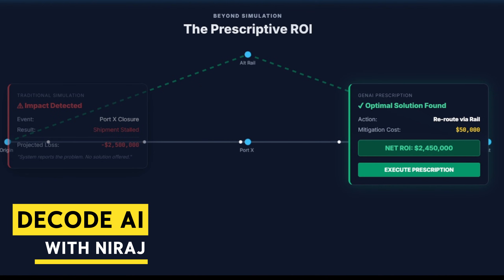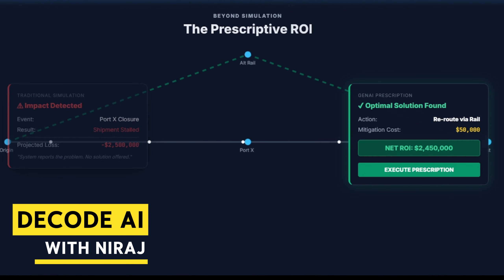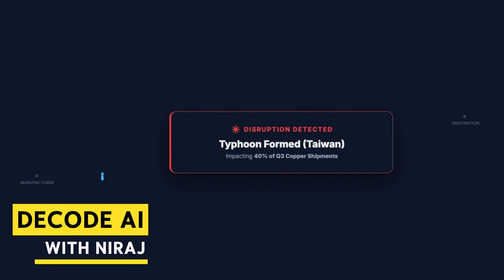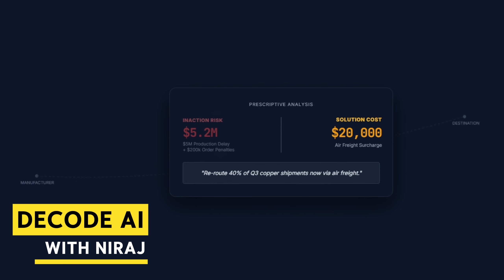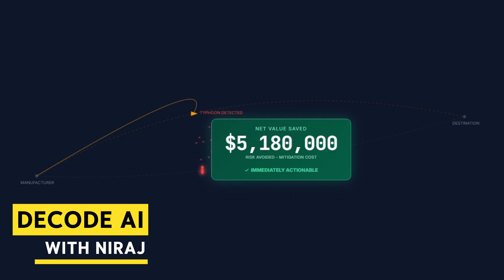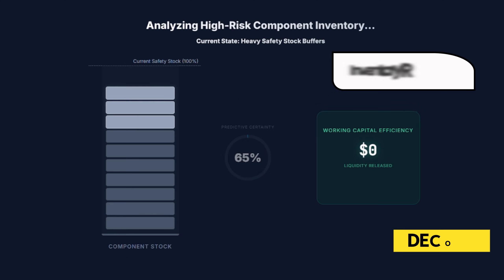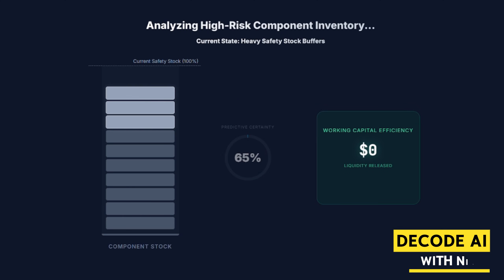Risk mitigation example: the digital twin identifies a developing typhoon in Taiwan impacting 40% of your Q3 copper shipment. The prescriptive response is to reroute 40% of the Q3 copper shipment now via air freight, costing only $20,000 extra — but saving $5 million in production delays and protecting $200,000 in future order cancellation penalties. The ROI is immediately visible and actionable.